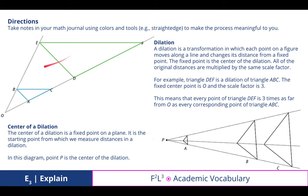Dilation: A dilation is a transformation in which each point on a figure moves along a line and changes its distance from a fixed point. The fixed point is the center of dilation. All the original distances are multiplied by the same scale factor. For example, triangle DEF is a dilation of triangle ABC. The fixed center point is point O and the scale factor is 3. If I measure this distance O to B, and take a total of three of those—one, two, three—that would get me to E. This means that every point of triangle DEF is also three times as far from O as every corresponding point of triangle ABC.